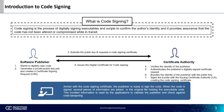What is code signing? Code signing is the process of digitally signing executables and scripts to confirm the author's identity and provide assurance that the code has not been altered or compromised in any way while in transit.